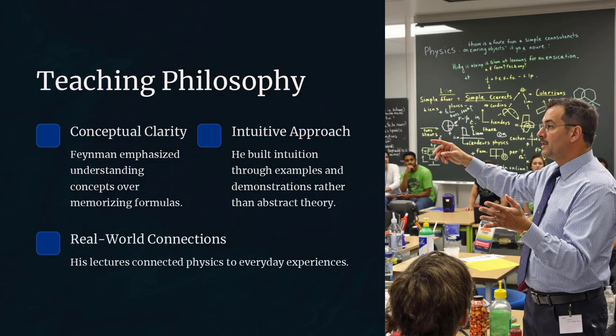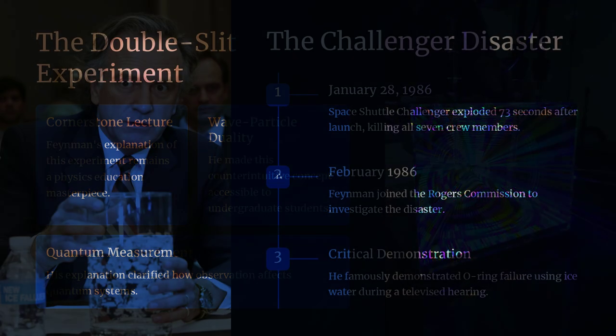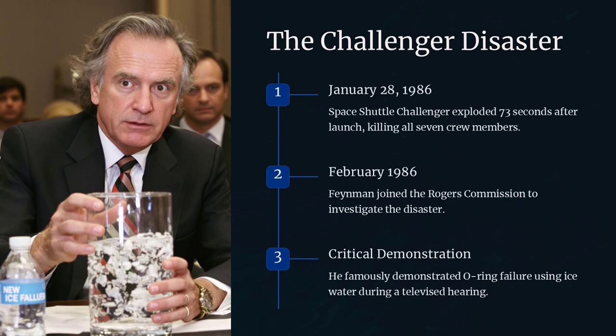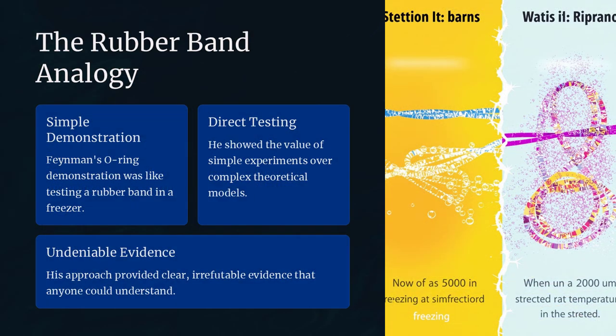He argued that scientific work must maintain integrity by being open, reproducible, and free of self-deception. How does this insistence on experimental evidence influence the reliability of scientific findings? Feynman's approach ensures that theories are not only elegant, but also grounded in observable reality.